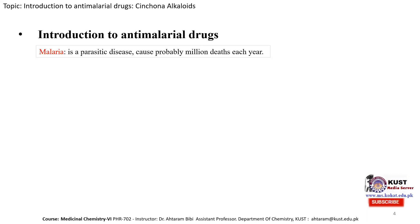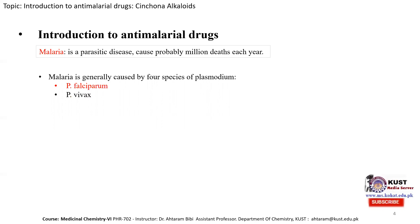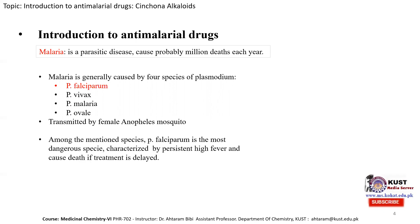What is malaria? Malaria is a parasitic disease and it can cause millions of deaths each year. The parasite which causes this disease is known as the plasmodium parasite. Four species of plasmodium cause malaria: Plasmodium falciparum, Plasmodium vivax, Plasmodium malariae, and Plasmodium ovale. These parasites are transmitted by the female Anopheles mosquito.